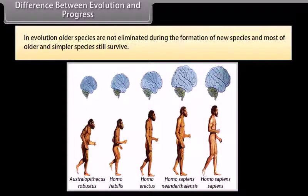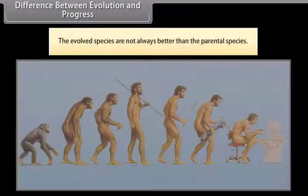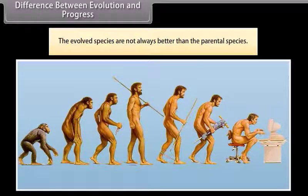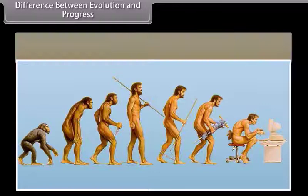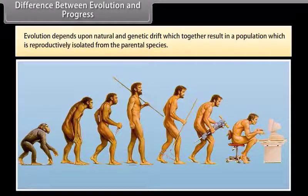Difference between evolution and progress: In evolution, older species are not eliminated during the formation of new species and most of the older and simpler species still survive. The evolved species are not always better than the parental species. Evolution depends upon natural selection and genetic drift which together result in a population which is reproductively isolated from the parental species.